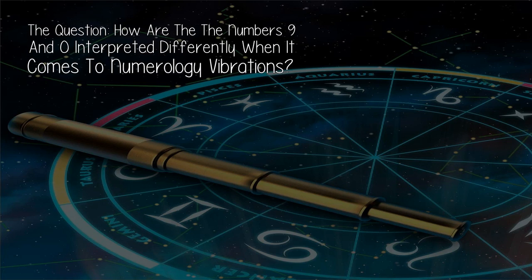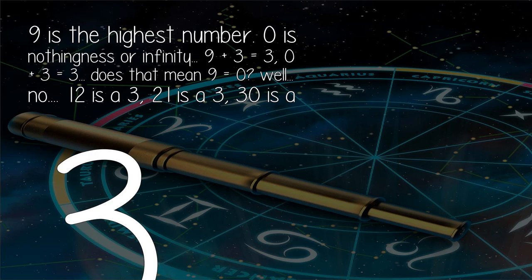The question: how are the numbers 9 and 0 interpreted differently when it comes to numerology vibrations? 9 is the highest number. 0 is nothingness or infinity. 9 plus 3 equals 3. 0 plus 3 equals 3. Does that mean 9 equals 0?